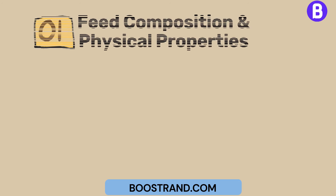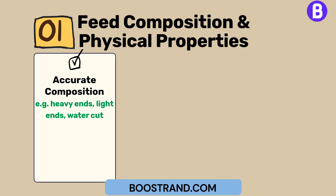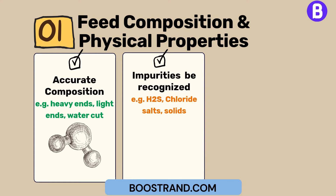The composition and physical properties of the feedstock play a crucial role in the accuracy of process models and simulations. Ensuring accurate and up-to-date information on the feedstock's composition is essential. Impurities should be well recognized as they can affect plant operation and may lead to adding new equipment to get rid of them.